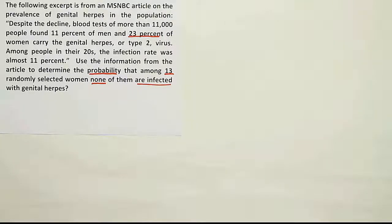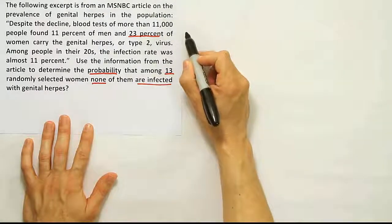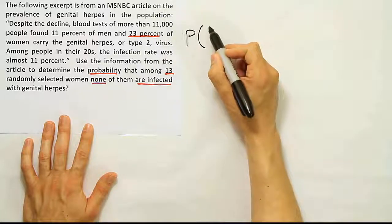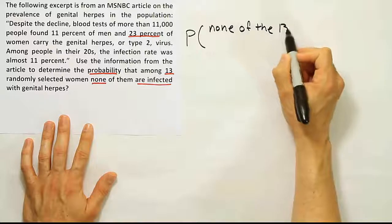So we can solve it by first writing out a probability statement and then plugging in the appropriate probabilities. Let's get a statement going that would help us solve the problem. We're going to look for the probability that none of the 13 women